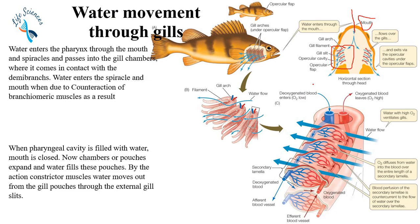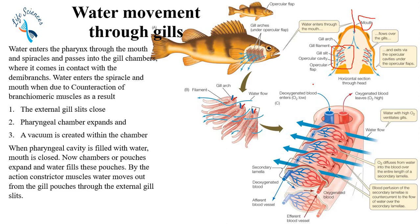Water enters the spiracles and mouth due to the contraction of the branchiomeric muscles. As a result of the branchiomeric muscles contracting, three things happen: number one, the external gill slits close; number two, the pharyngeal chamber expands; number three, the internal pharyngeal cavity increases in size.